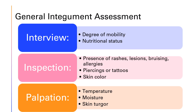The integumentary system is comprised of the skin, hair, nails, scalp, sweat, and sebaceous glands. The skin covers the entire body, so when we assess each body system, we look at the skin for each one.